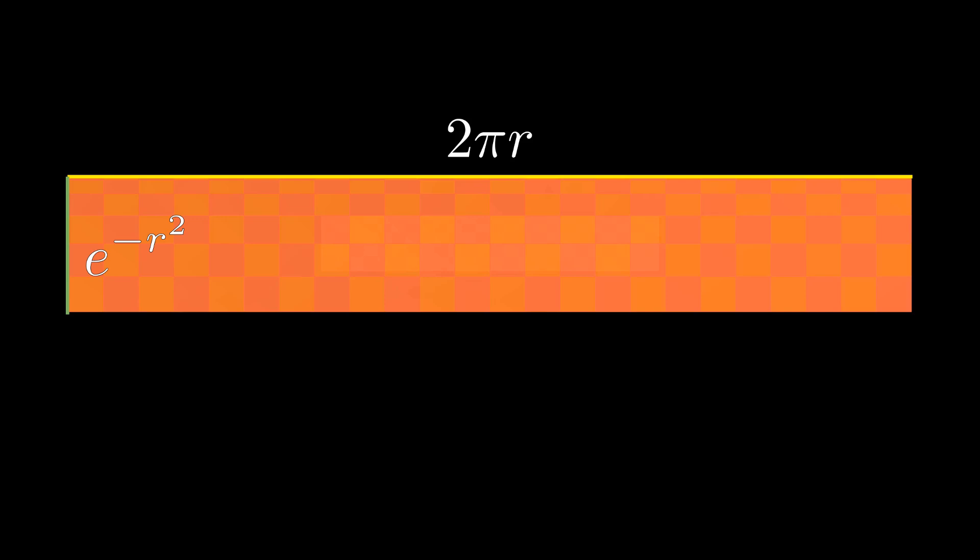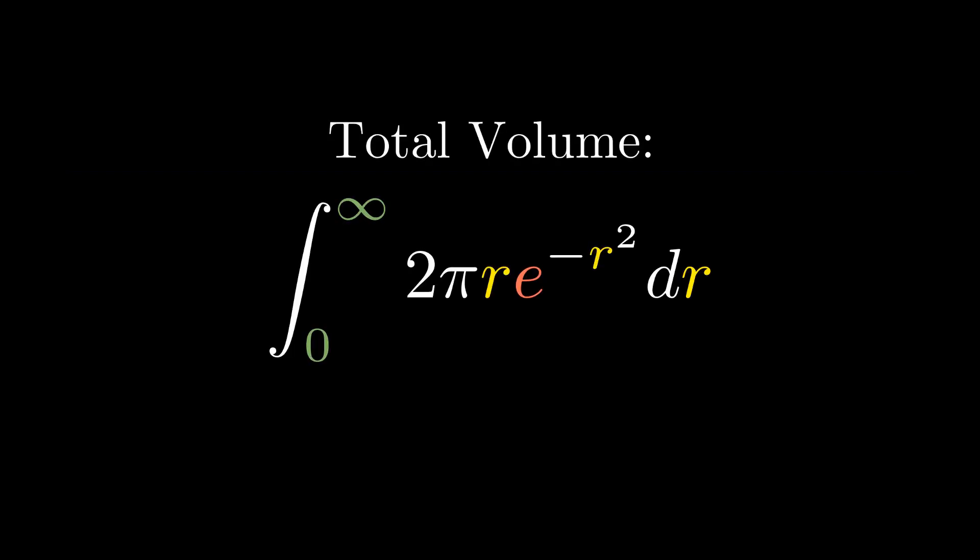The length is simply the circumference or 2 pi r. The width of this cuboid is a really small value, which I'll just call dr. So, the volume of one shell is 2 pi r e to the minus r squared dr. So, the whole volume is the integral from 0 to infinity of 2 pi r e to the negative r squared dr, which is quite doable with a bit of u substitution.